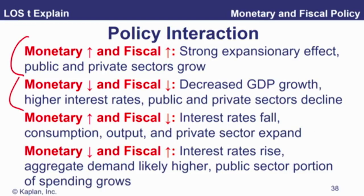Where the up arrow means expansionary monetary and expansionary fiscal — well, it's going to be expansionary. Makes sense. Second one, they are both contractionary — yes, it's going to bring down your growth. So those are fairly straightforward.